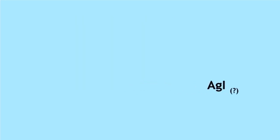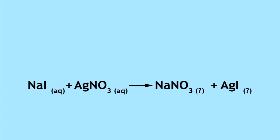Referring back to the equation, we represent this by writing aq in brackets as a subscript after sodium nitrate and s in brackets as a subscript after silver iodide.